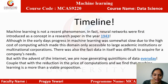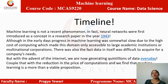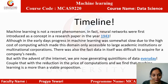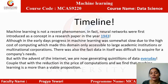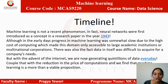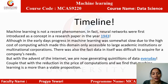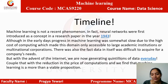Here is a timeline of how machine learning grew — it is not a recent phenomenon. Neural networks were first introduced as a concept in a research paper in 1943. In early days, progress in machine learning was slow due to the high cost of computing, making it accessible only to large academic institutions or multinational corporations like IBM. But with the advent of the internet, we now generate quintillions of bytes of data every day, making machine learning a viable proposition.